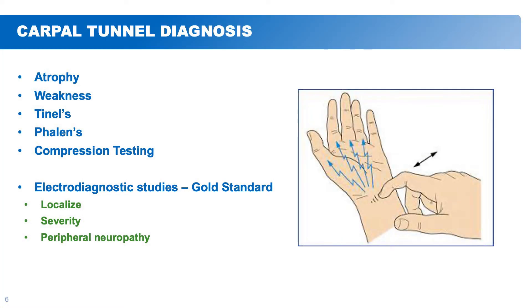How do we diagnose carpal tunnel? A lot of it is by physical examination. We look at your hand for any atrophy or muscle wasting, check your strength for weakness, and perform Tinel's test — tapping on the nerve — which can send shock waves into your fingers if the nerve is compressed. Compression testing tries to recreate your symptoms by pressing on the nerve. Ultimately, the gold standard is electrodiagnostic studies to see the severity of nerve compression and to determine whether symptoms are coming from the neck, the wrist, or a peripheral neuropathy involving a different nerve altogether.